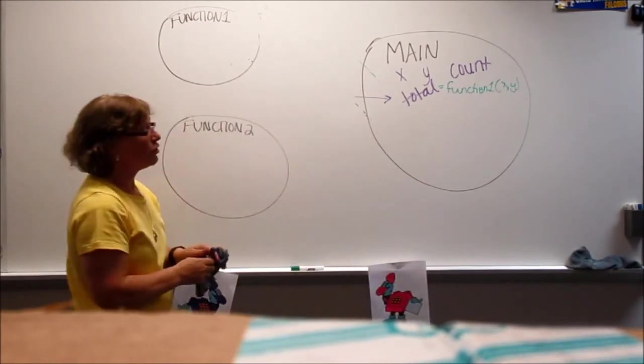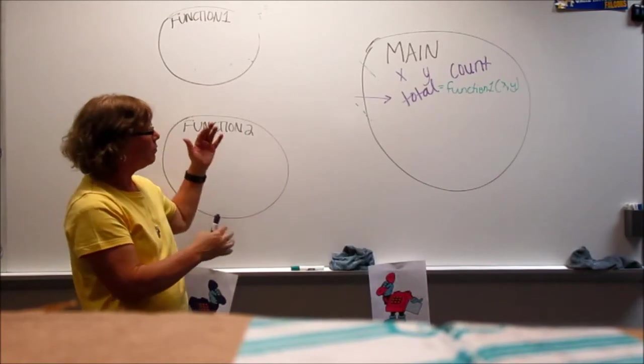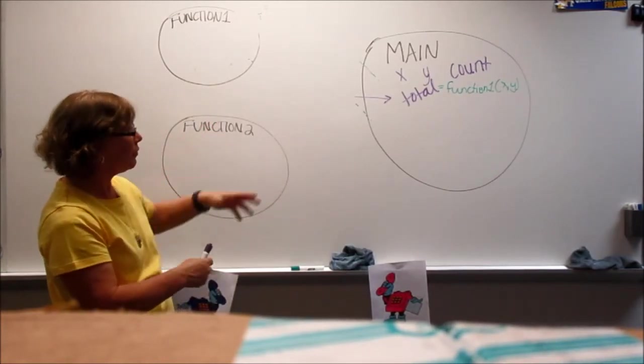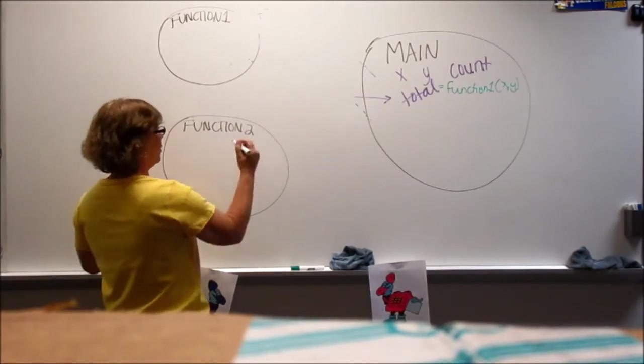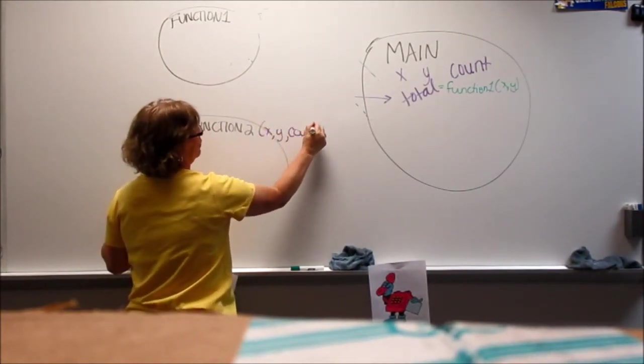Now, maybe over here, function two is not going to be a return function. It's going to be a void function, maybe it's just going to print. So, function two wants to print all those values. It says, oh, I'm going to print x, y, count, and total.